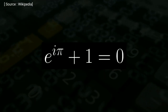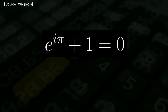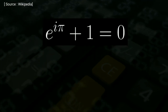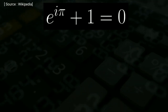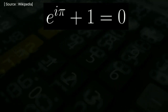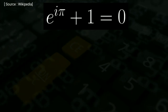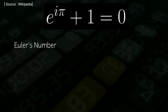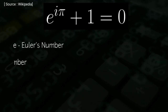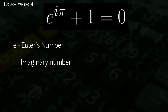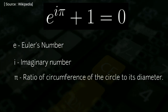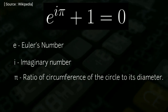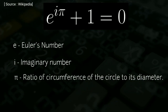Euler's identity, or Euler's equation, is given by e to the power i times pi, plus 1, equal to 0. Where E is Euler's number, the base of natural logarithms; i is the imaginary unit; and pi is the ratio of the circumference of a circle to its diameter.